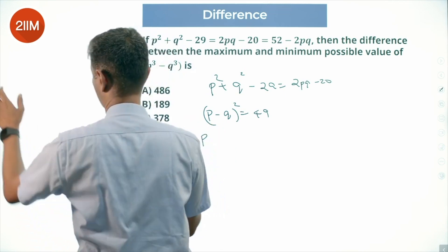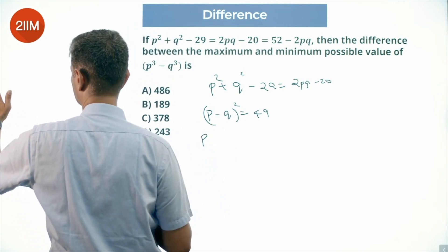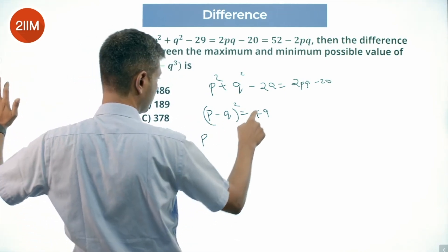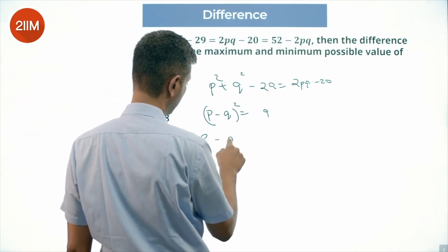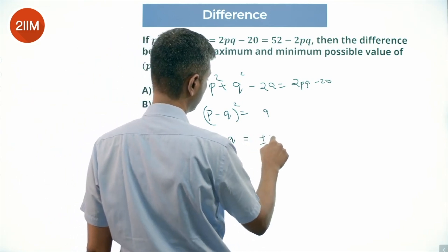So minus 20, not 49, just 9. Oops, just walked into that one, didn't I? P minus Q is plus or minus 3.